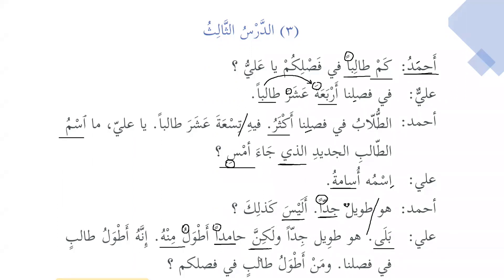Bala huwa tawilun jiddan, walakinna Hamidan atwalu minhu — yes, he is very tall, but Hamid is taller than him. Innahu atwalu talibin fi faslina — indeed, he is the tallest student in our classroom. Why do we translate it as 'the tallest'? Because after atwalu, we have the noun that is majroor. So after the sigha — the form af'al — if we have min, it is comparative; and if we have a majroor noun after it, then it is superlative. Innahu — huwa will be ismu Inna, atwalu will be khabaru Inna. Indeed, he is the tallest student in our classroom.